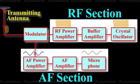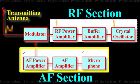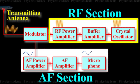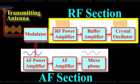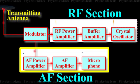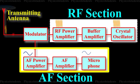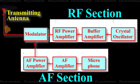It consists of two sections: audio frequency AF section and radio frequency RF section. Now let us see about the AF section, i.e. audio frequency section. The AF section of the transmitter generates the modulating wave, i.e. the signal.